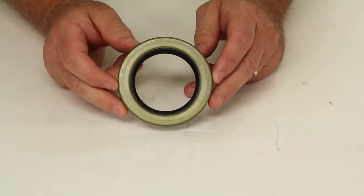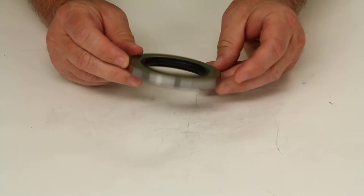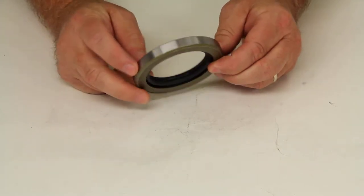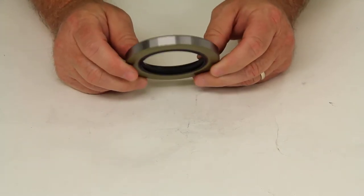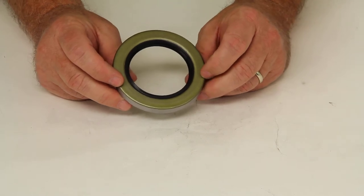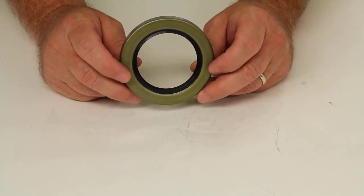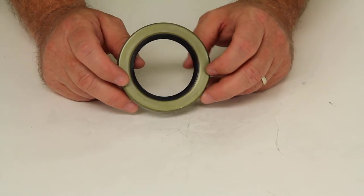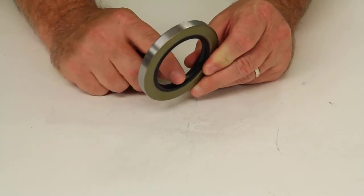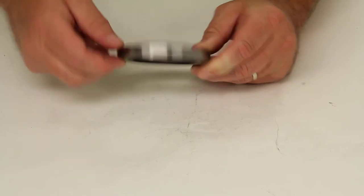Today we're going to review part number 9103309. This is a Redline oil seal. This oil seal is designed for 8,000-pound Hayes axles. It is a double lip, double case.